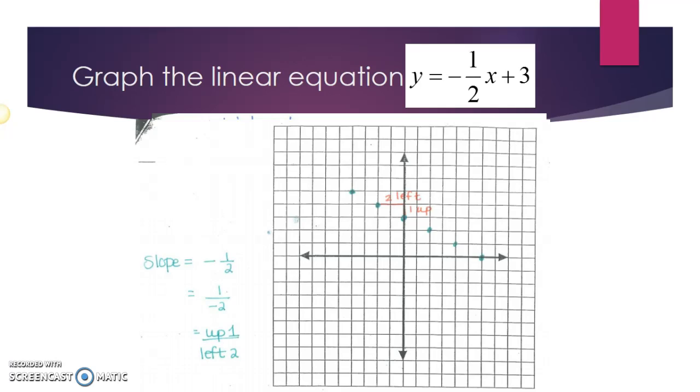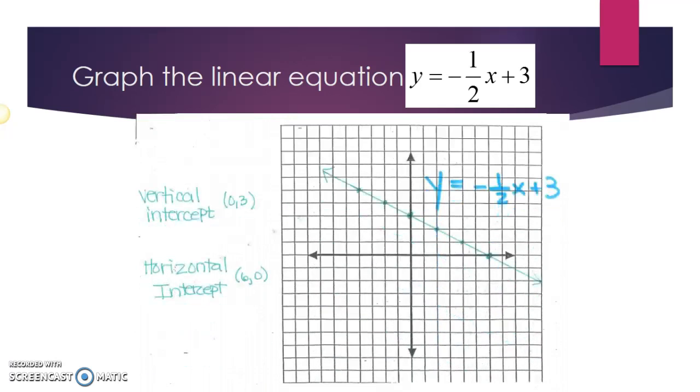So I'm going back to my y-intercept, which is at zero comma three, and notice now how I'm traveling up one unit and two units to the left. But I'm still falling in the pattern of the line. And I can continue going up one unit and two units to the left.